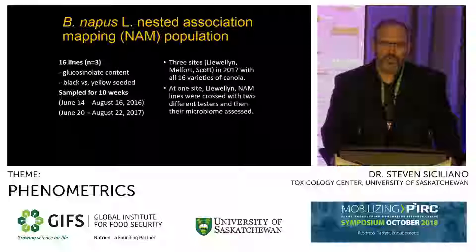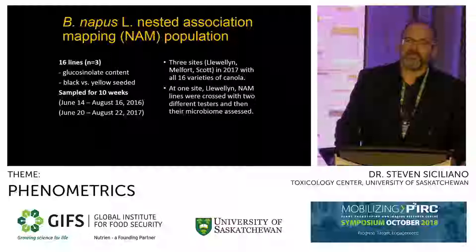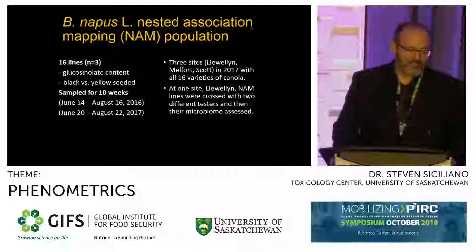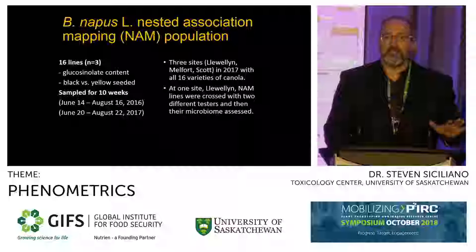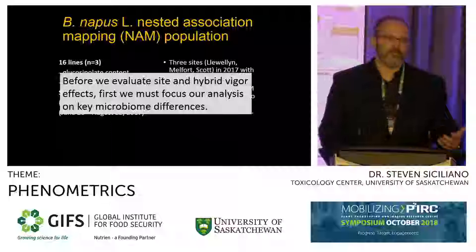To do so, we built on the work led by Isabel and Sally with BraSCA NAPIS, a nested association mapping population, in which Sally picked 16 lines to grow at Llewellyn. They differed in glucosonic content and black versus yellow seeded. We sampled them for 10 weeks in two different years, and in the second year we worked at three different sites. At one site in the second year, we crossed our NAM lines with two different testers and then assessed the microbiome.